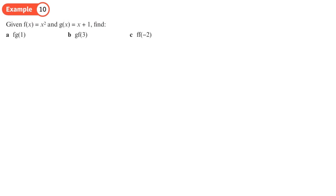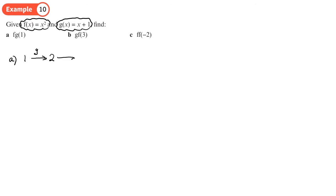So here we have two functions: f(x) and g(x). Part a says start with 1, put 1 into g then put it into f. You put 1 into g, which says add one to it, so you get 2. Then you put 2 into f, which says square it, so you end up with 4.